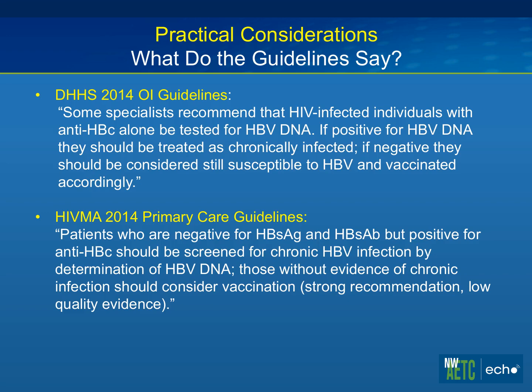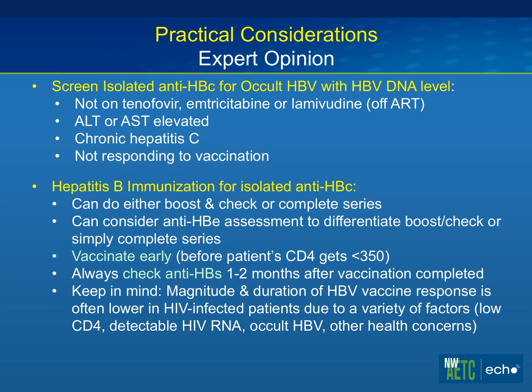What do the guidelines say? If you have a patient with an isolated core, you should test them for HBV DNA. If they're positive, you should treat them as a chronic carrier. If they're negative, they should be considered susceptible and vaccinated accordingly. HIV and HBV guidelines say the same thing, but they don't really spell out how to vaccinate these individuals. My recommendation: if you're going to screen isolated core folks for occult hepatitis B with HBV DNA, ideally they should be off tenofovir, emtricitabine, or lamivudine. A lot of times we capture these folks and they're already on Truvada. If they are on therapy and their ALT or AST is elevated and otherwise unexplained, that might be a time to check their HBV DNA. Certainly if they have chronic hepatitis C, it's reasonable to check, because if they're a chronic carrier for both B and C, that may change screening for HCC.